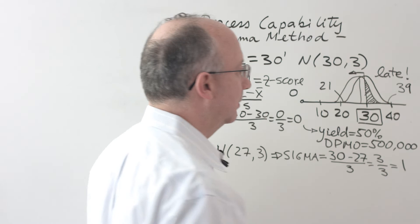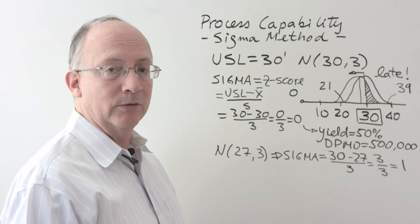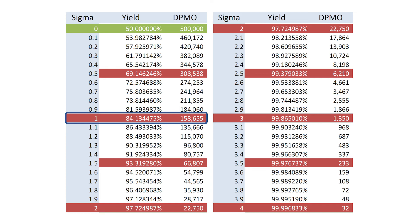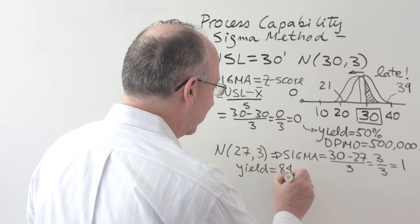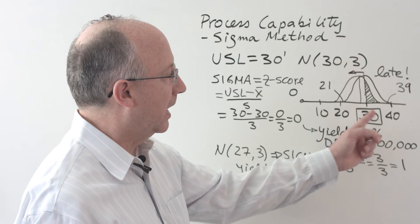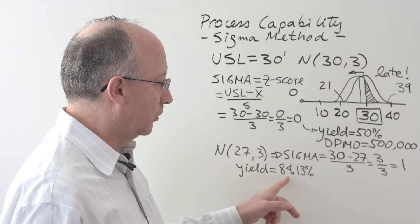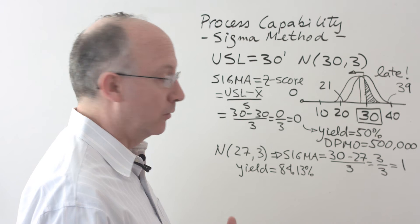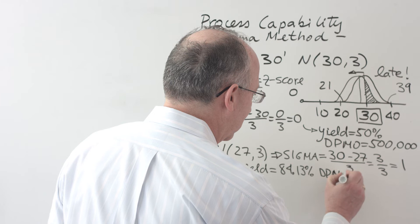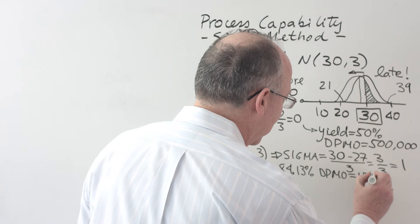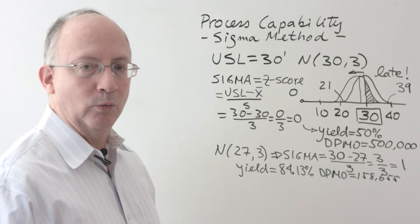So what you have is that what originally had been this entire space over here to the left as a 50% of error or late deliveries, now it has become a much smaller portion of it. And the reason is because we have moved the curve towards the left. From tables, we can find what those numbers are. The table tells us that the yield is going to be equal to 84.13%, which means that we have increased tremendously from what used to be 50% late. The DPMO value is going to be equal to 158,655. So this is the number of defective that we get by accelerating the process.